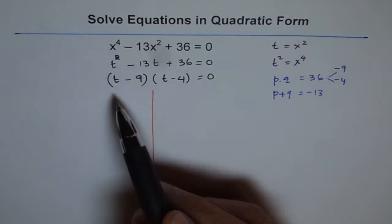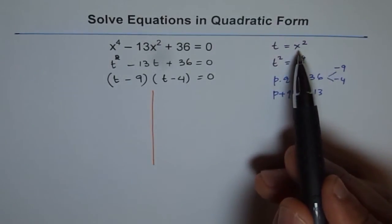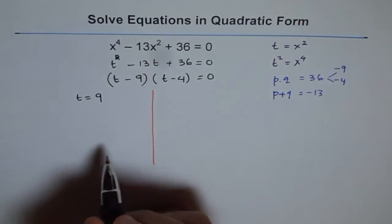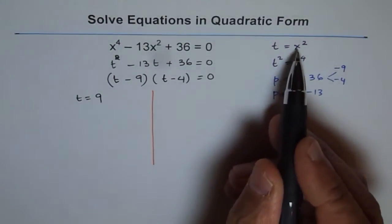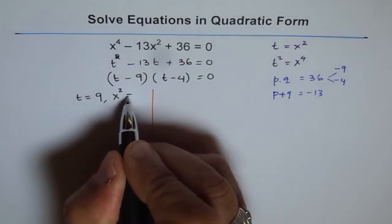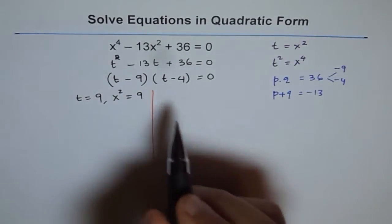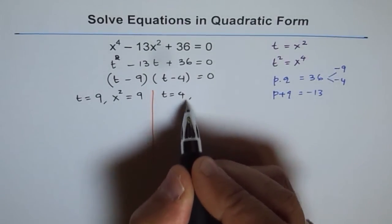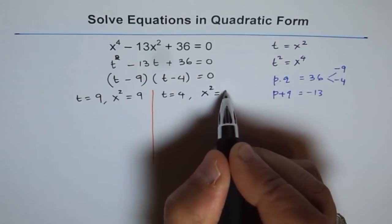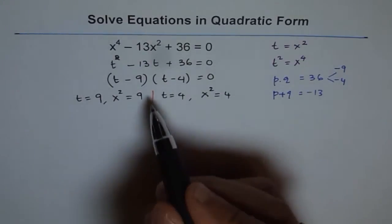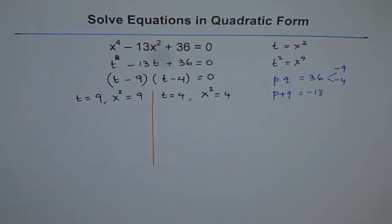Now remember what is t? t is x squared. So when we say t equals 9 is the solution, then it means x squared equals 9 is the solution. And when we say t equals 4 is the solution, then it means x squared equals 4 is the solution. So we got these two possibilities and therefore I have drawn a line in between. Now let's solve them.